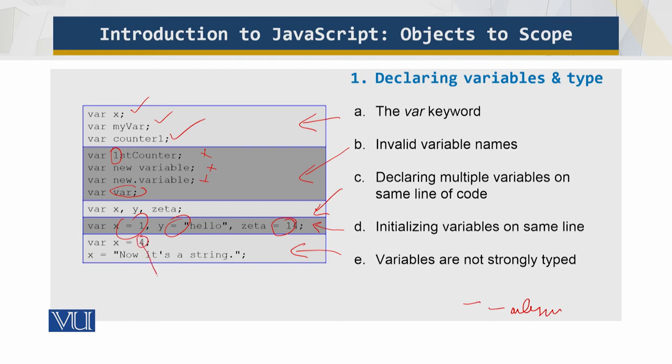So this is an integer over here, and then it becomes a string. They are not strongly typed.